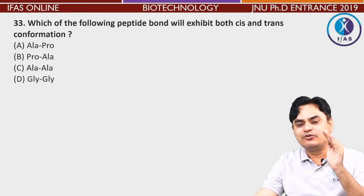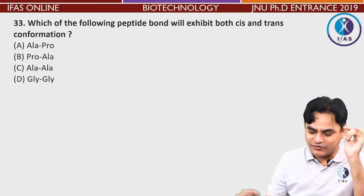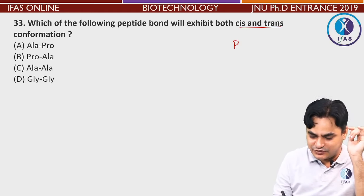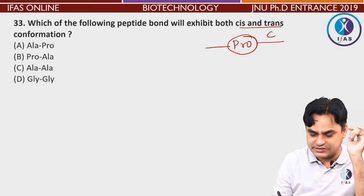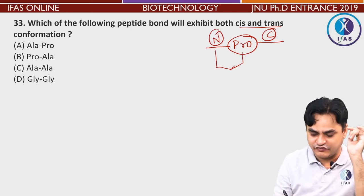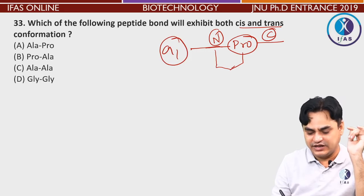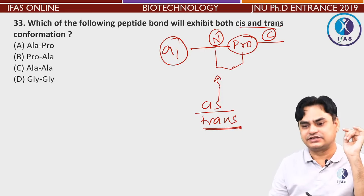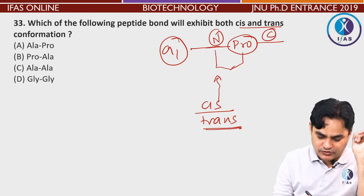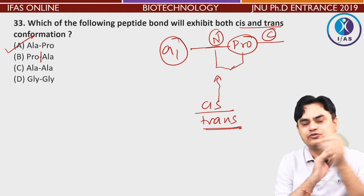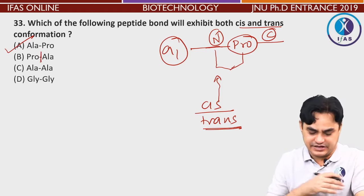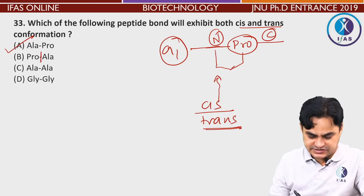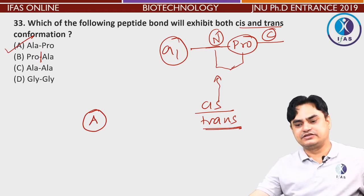Which of the following peptides will exhibit both cis and trans isomers? The amino acid that forms cis/trans isomers is proline, specifically at its N-terminus side. So the answer is alanine-proline, because the problem is at proline's N-terminus, not the C-terminus side. The correct answer is A.